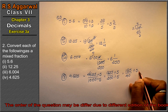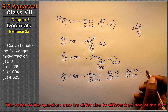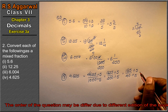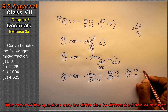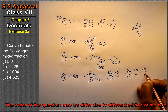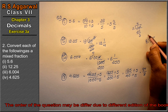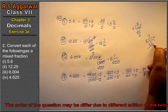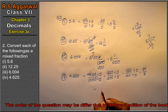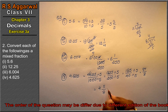Divide by 5 again: 185 divided by 5 is 37, and 40 divided by 5 is 8. Now divide 37 by 8: 8 times 4 is 32, remainder 5. So the whole number is 4 and the fraction is 5 upon 8. Dividing both gives us the final mixed fraction, which is the answer.